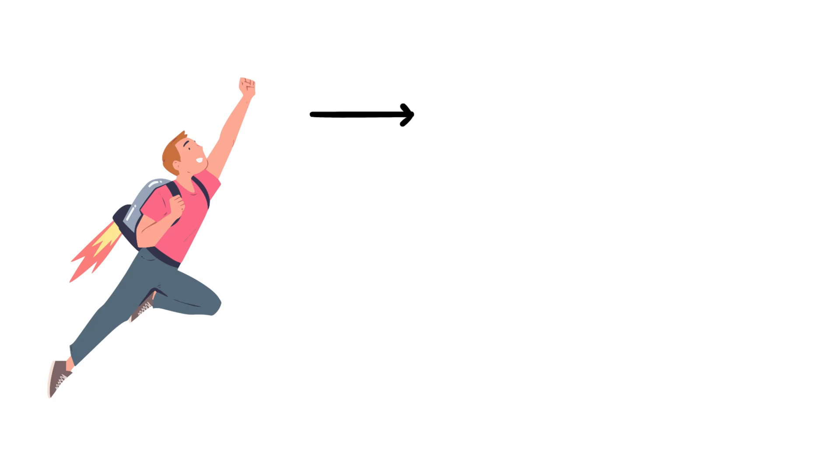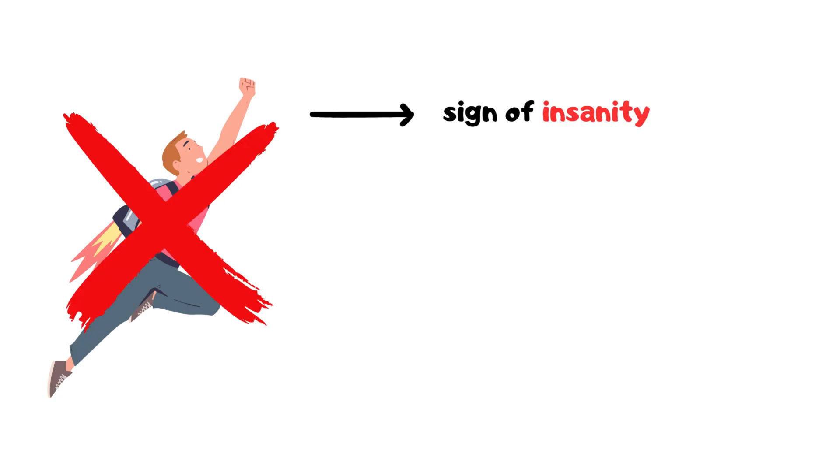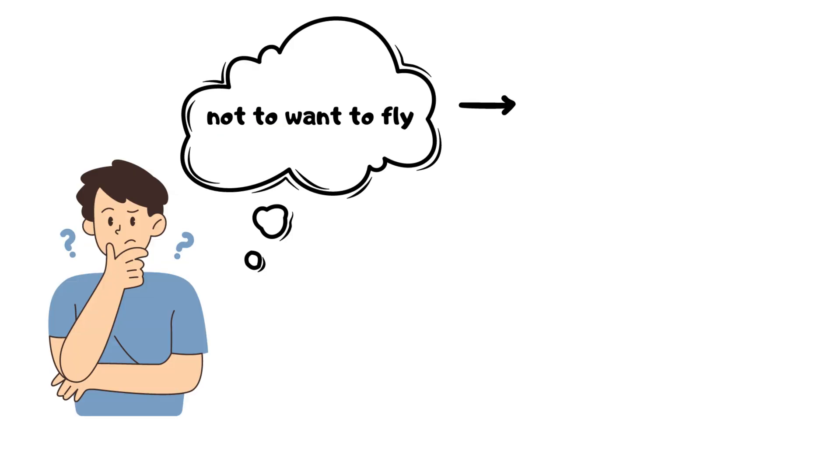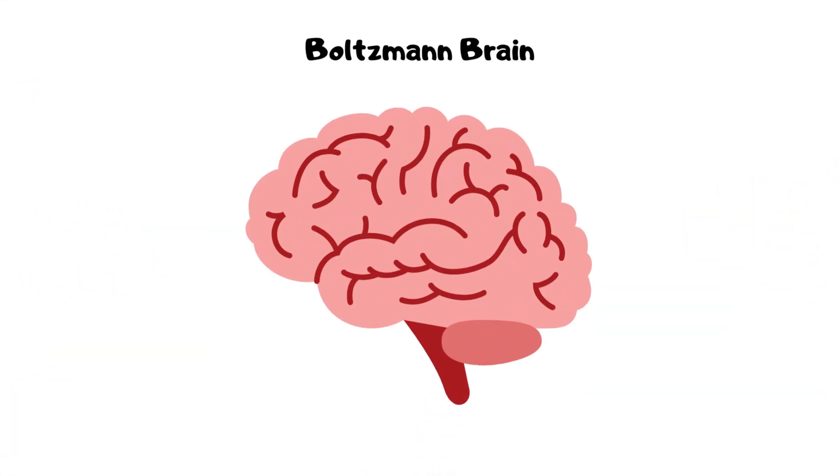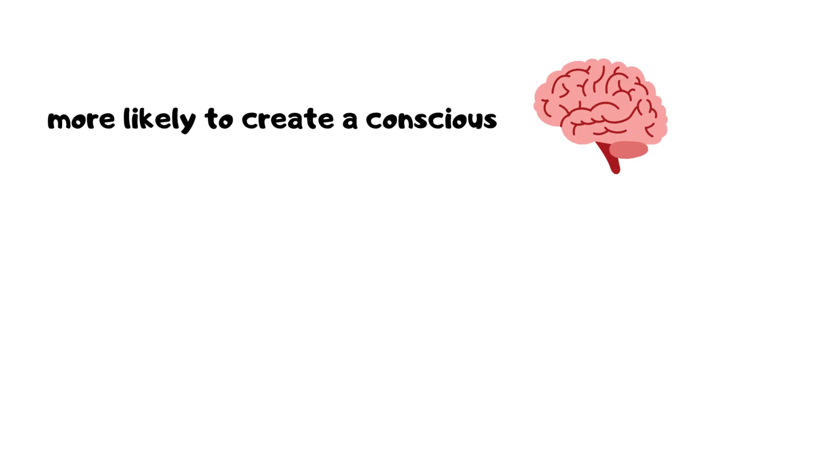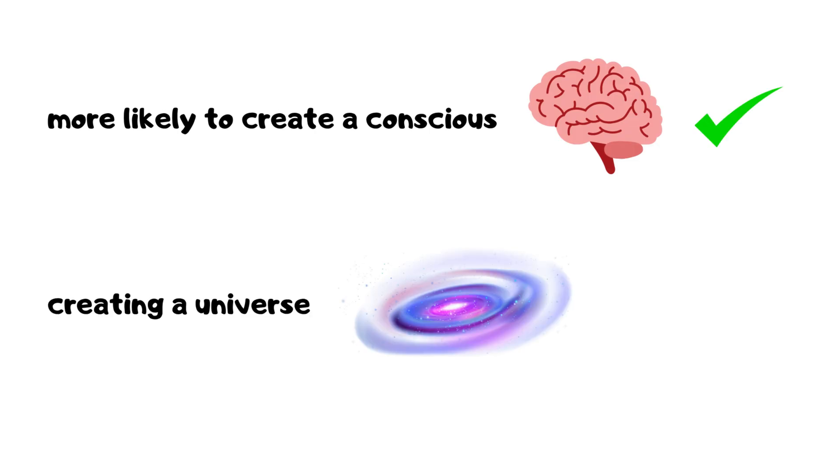Catch-22. To want to fly is a sign of insanity and therefore requires one to be exempt from flying, but not to want to fly is an obligation to fly. Boltzmann brain. It is more likely to create a conscious brain in the universe than it is to create a universe.